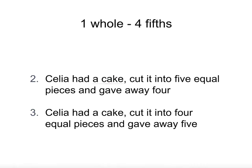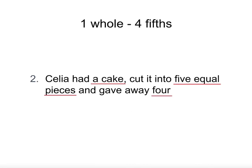The next story is a whole cake cut into five equal pieces — this is fifths, so it looks good so far. Then she gave away four, so this would be minus four fifths. Let's check the final story to be sure. It starts with a whole cake and cuts it into four equal parts, so this is quarters and doesn't match. It states giving away five pieces, so it doesn't match our number story. In symbols, this story is one take away four fifths, which equals one fifth. Underlining key parts of the story helps us to decide the matching maths.